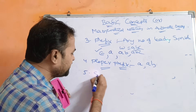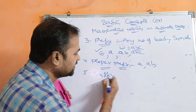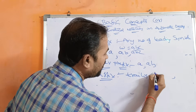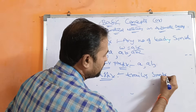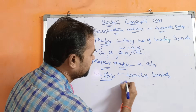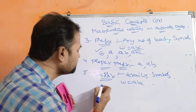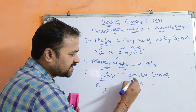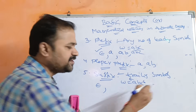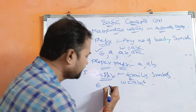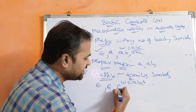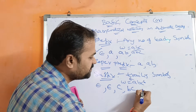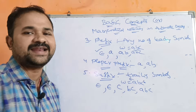Now let us see the suffix of a string. A suffix means any number of trailing symbols. If W = ABC, then the suffixes are: epsilon (since ABC = epsilon·ABC·epsilon), C, BC, and ABC.